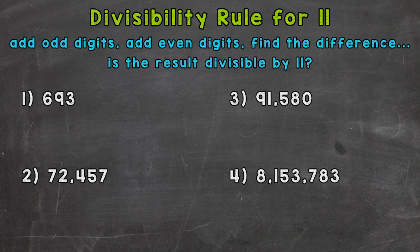So let's jump into number one, where we have 693. The first thing I want to do is count from left to right our digits. So 6 is 1, our first digit. 9 is 2, and 3 is 3. So that's what I mean by odd and even digits.